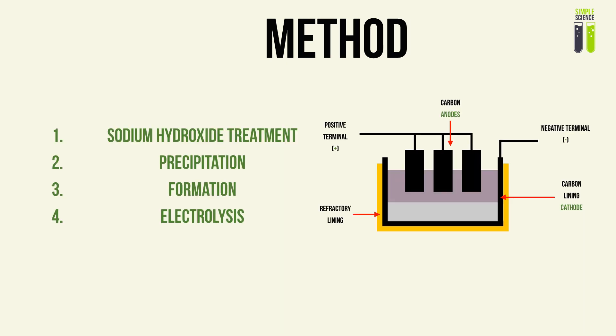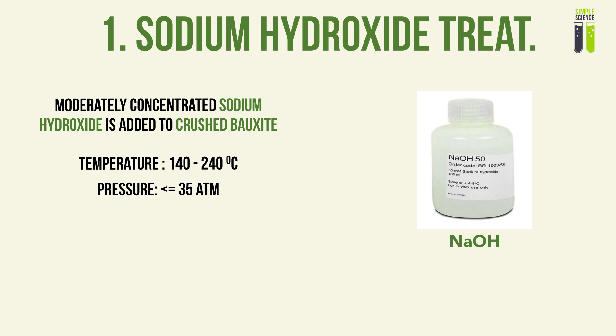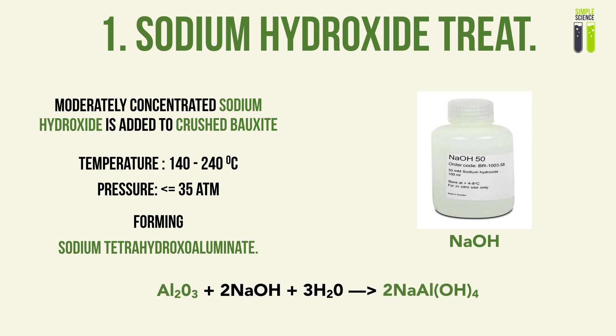The method of extracting pure aluminium from the impure bauxite ore involves four processes. The first three processes purify aluminium oxide before electrolysis. The first step: from the original bauxite ore, we crush it and mix it with moderately concentrated sodium hydroxide at conditions of 140 to 240 degrees Celsius and a pressure of less than or equal to 35 atm. These are quite harsh, high-pressure conditions. This produces sodium tetrahydroxoaluminate. Aluminium oxide reacts with sodium hydroxide in the presence of water to produce sodium tetrahydroxoaluminate.